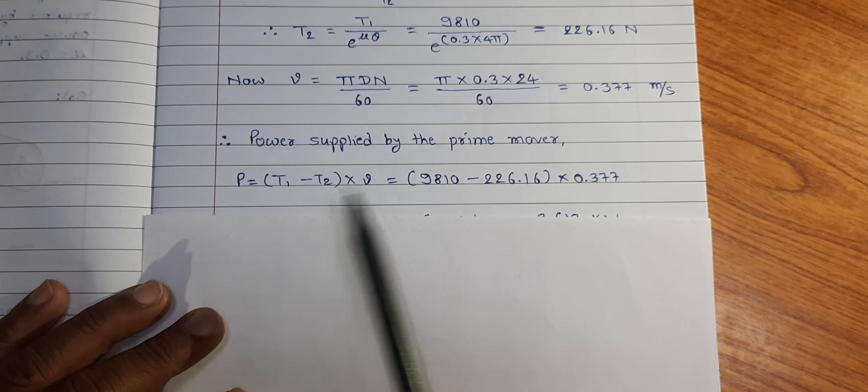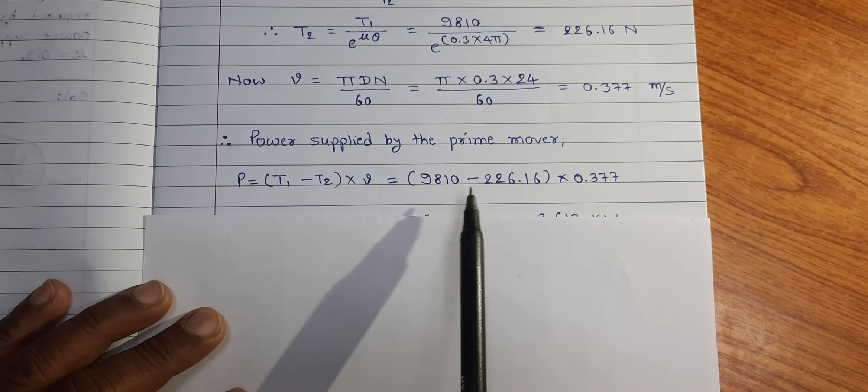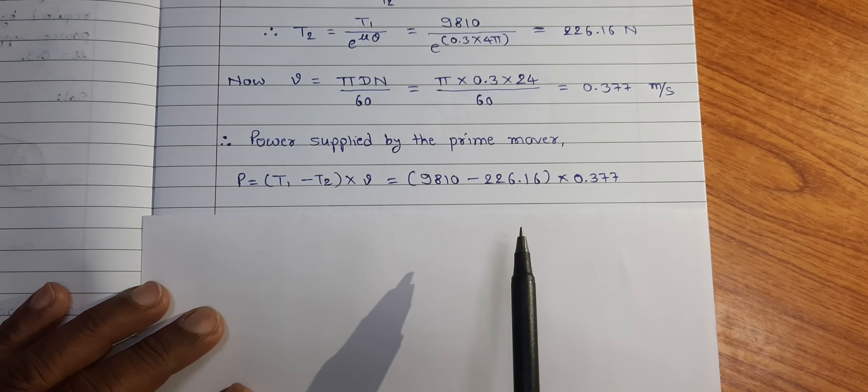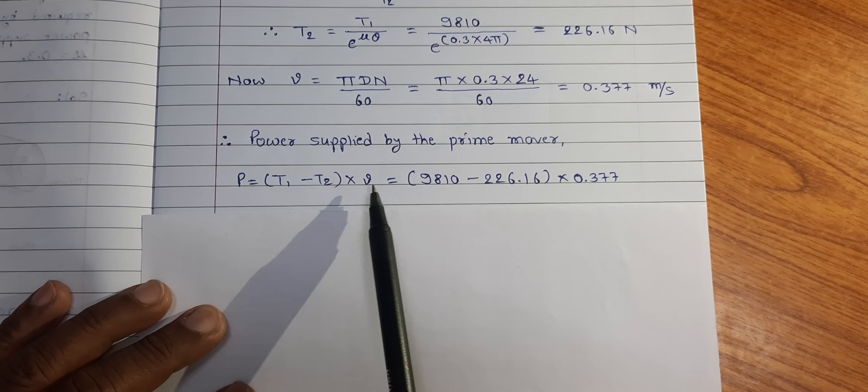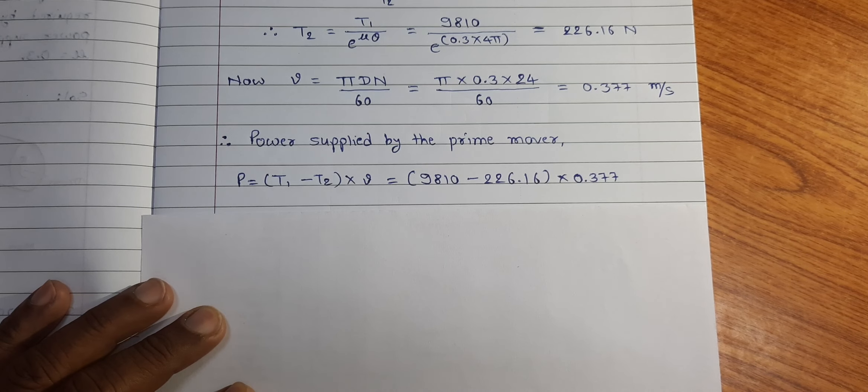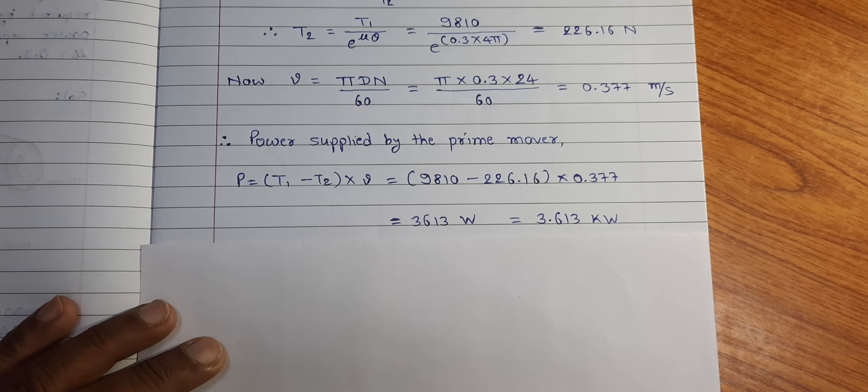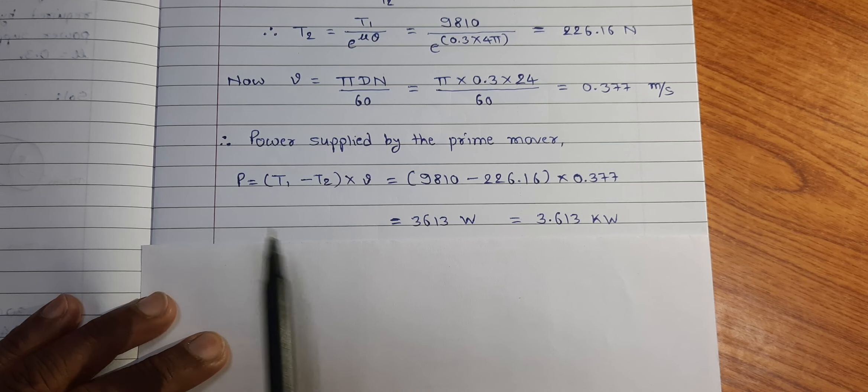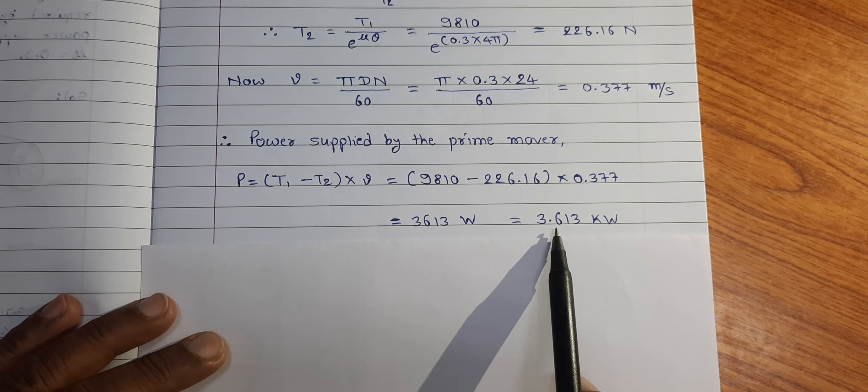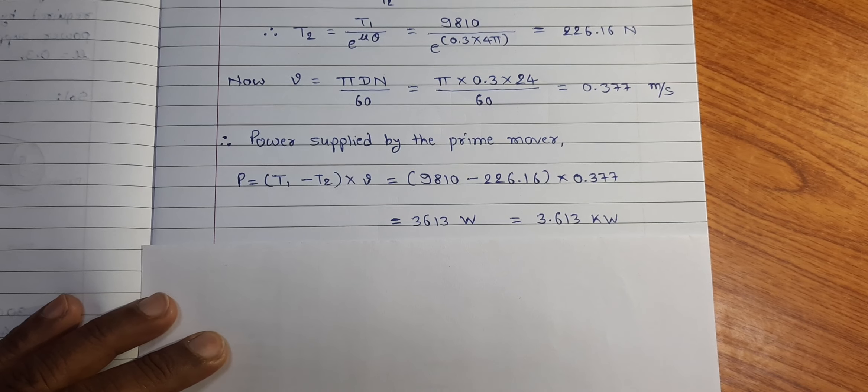Substituting all these known values T1 is equal to 9810 minus T2 is equal to 226.16 into velocity is equal to 0.377. On calculation we found that power P is equal to 3613 Watt is equal to 3.613 KW.